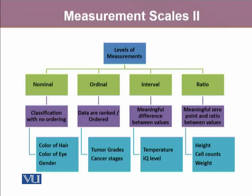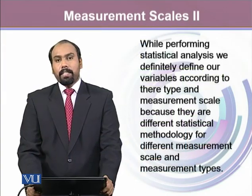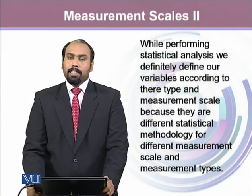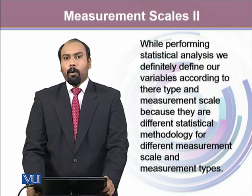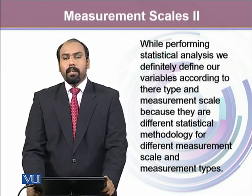This is a quick rundown of the different measurement scales. There are four: nominal, ordinal, interval, and ratio. Nominal variables are classified with no ordering, like color of hair, color of eye, or gender. Ordinal variables are ranked and ordered, still classified — examples include tumor grade or cancer stages. Meaningful difference between values characterizes interval scale, such as temperature and IQ. A meaningful zero point with ratios between values defines a ratio scale, which could include height, cell counts, or weights. When performing statistical analysis, we define our variables according to their type and the scale on which they have been measured, since different statistical methodologies apply to each different type of variable and measurement scale.